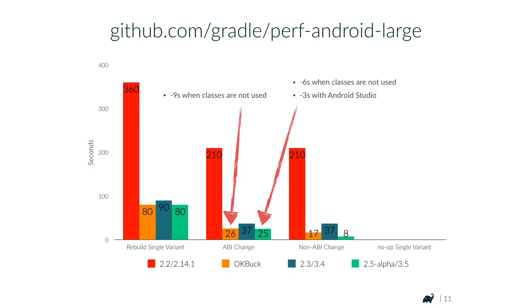A couple of things to point out: this test project represents a corner case and does not reflect the reality of 99% of Android projects out there. It created some non-linear performance effects because of its size — with Android Plugin 2.2, half the build time was spent in the garbage collector because it hit memory limits. For most Android projects, Buck was never 4 to 12 times faster. Don't necessarily expect your project will be 26 times faster when you update to 2.5 alpha.